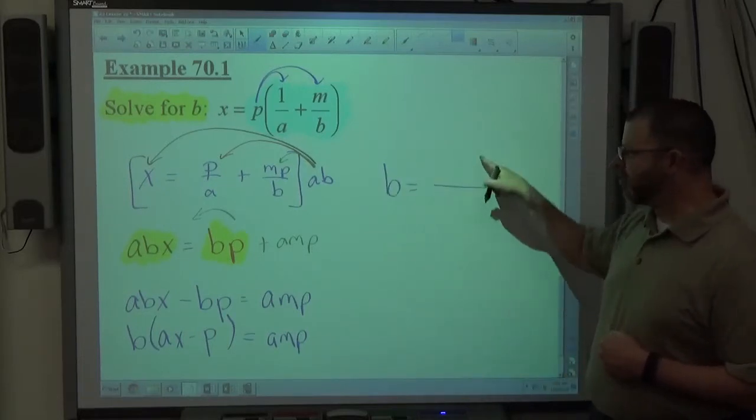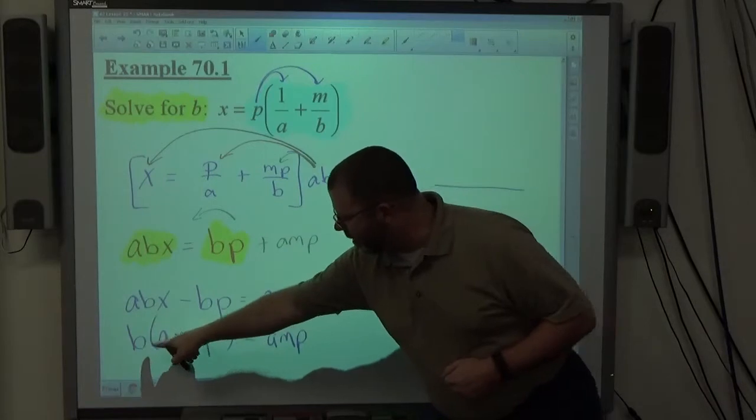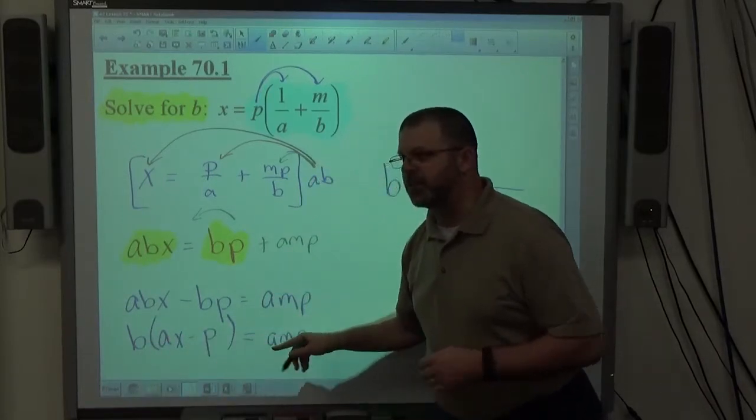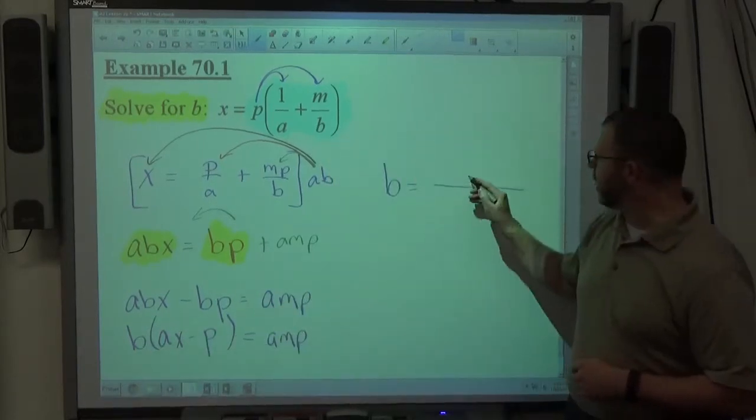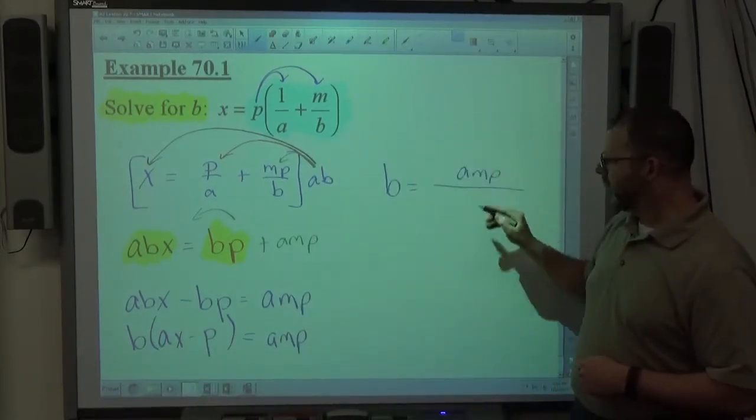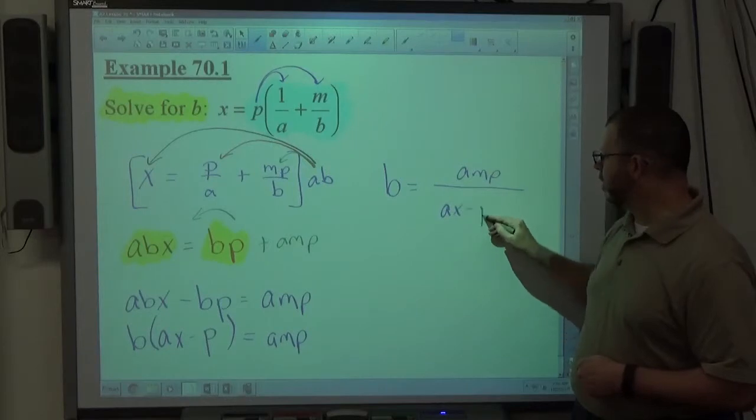And the final step is we want to get B equals. I'm going to create a fraction every time. Notice where B is. It's on this side with the AX minus P. AMP is on this side. So we're going to divide both sides by AX minus P, which means AMP goes on top, the AX minus P goes on the bottom.